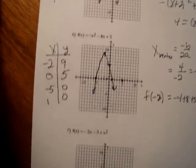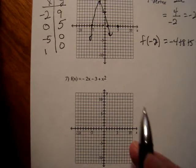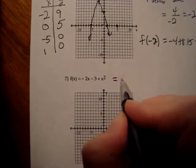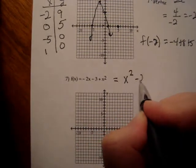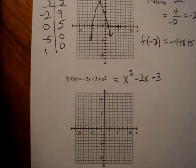Now be careful on number 7. I think you guys can finish number 7. But the first thing I would do is write it in descending order of power. So that is x squared minus 2x minus 3. And now go from there. Find the vertex, find the y-intercept, find the x-intercepts. The next one, we will do the word problems.